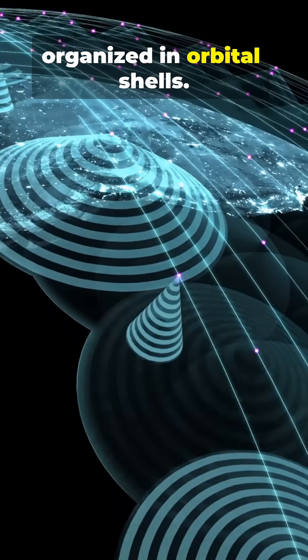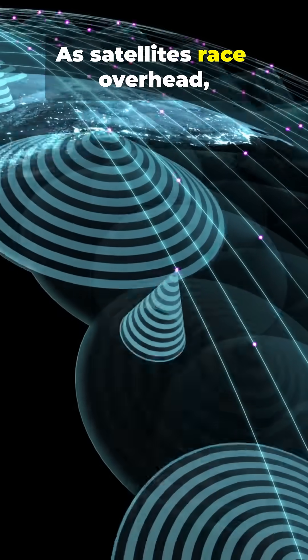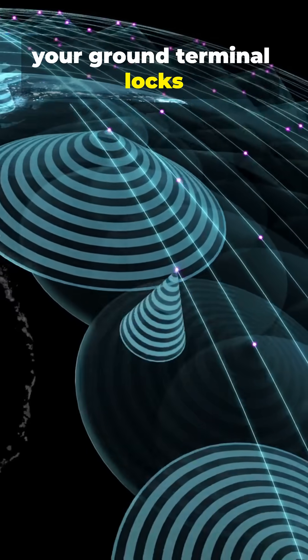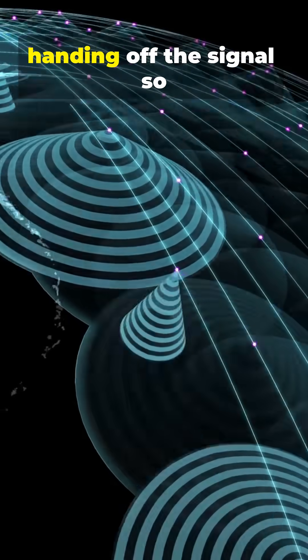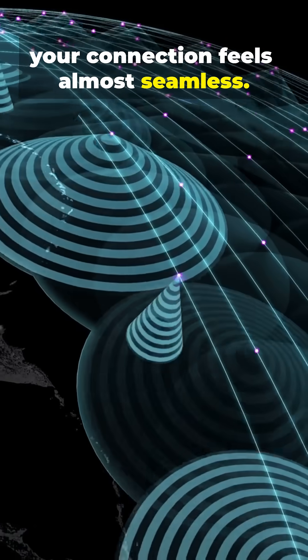The constellation is organized in orbital shells. As satellites race overhead, your ground terminal locks onto one, then another, handing off the signal so your connection feels almost seamless.